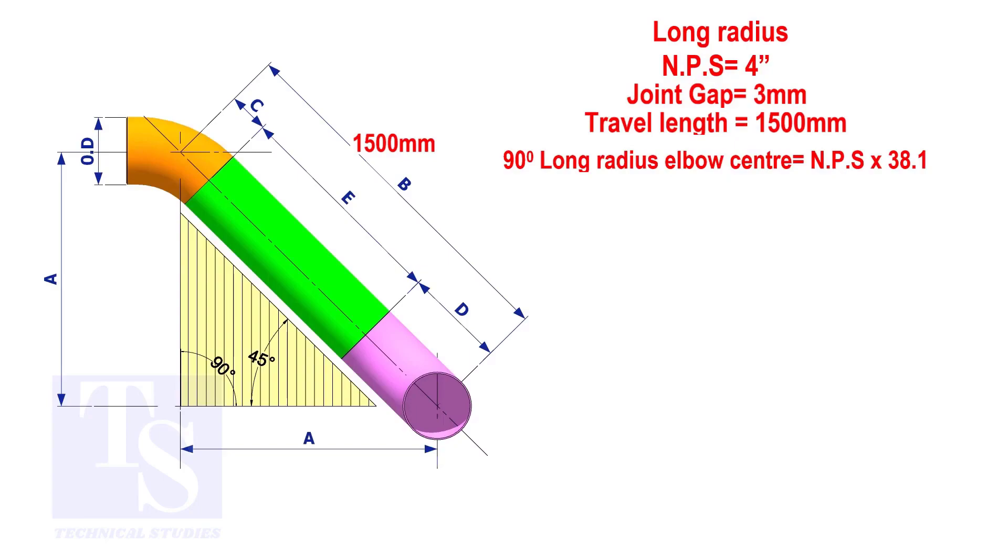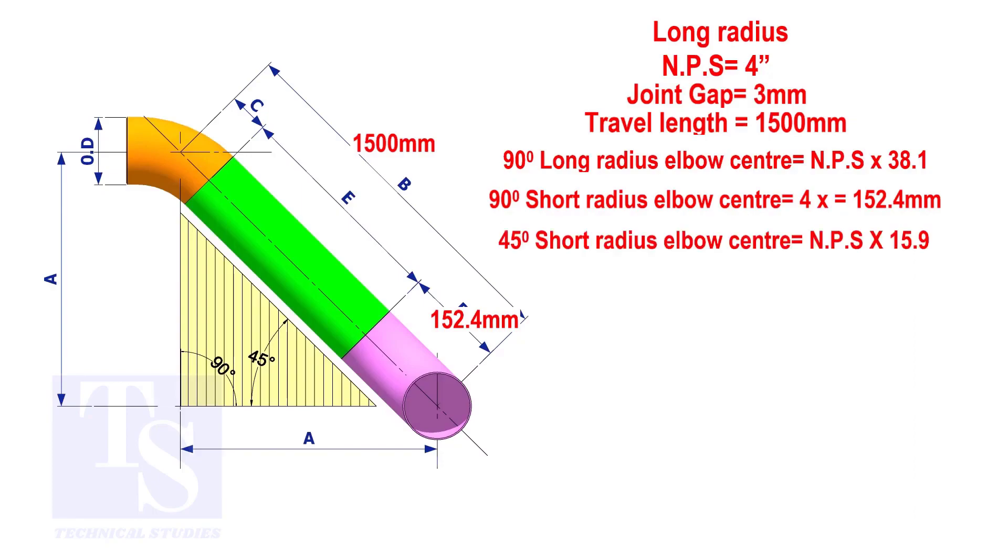The elbow center is the nominal pipe size multiplied by 38.1. So the elbow center of the 90 degree elbow is 152.4 millimeters. To calculate the elbow center of a 45 degree long radius elbow, multiply the nominal pipe size by 15.9. The answer is 63.6 millimeters.